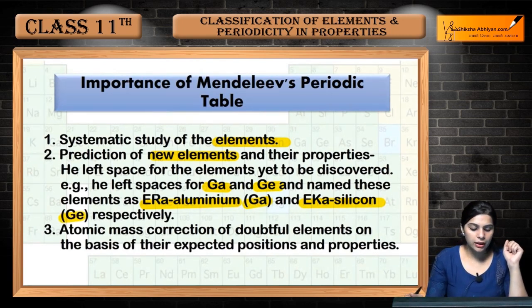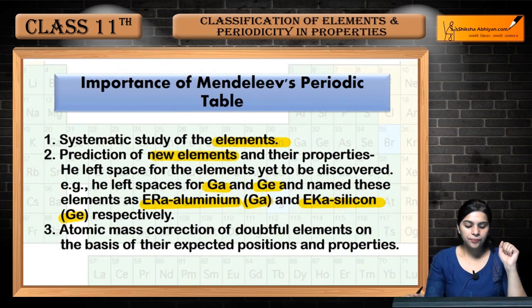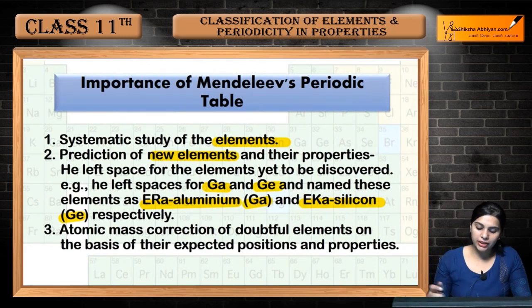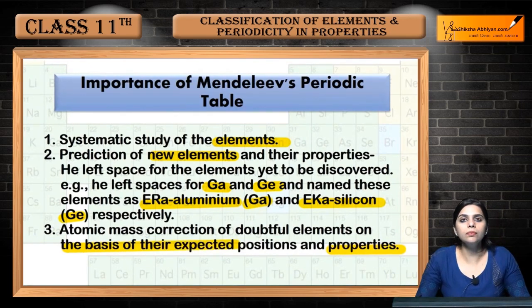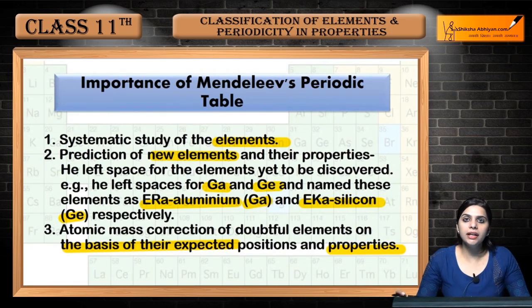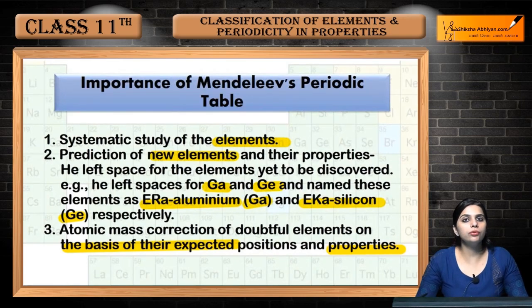The third importance was atomic mass correction of doubtful elements on the basis of their expected positions and properties. Elements whose atomic masses were in doubt were proven and then placed correctly in the periodic table.